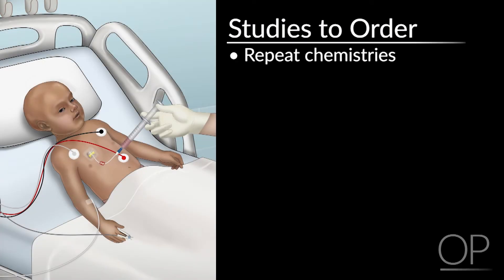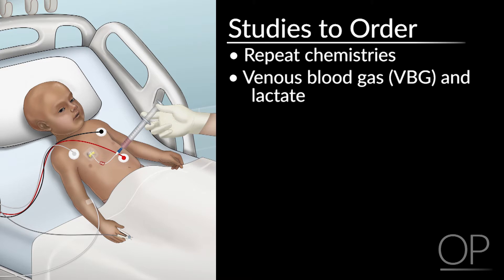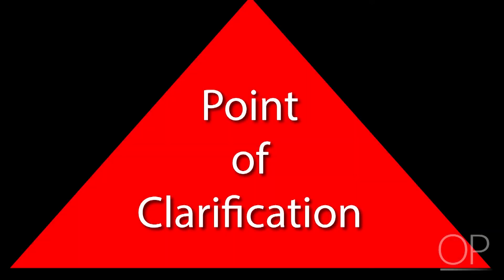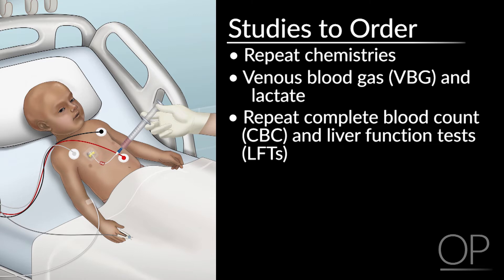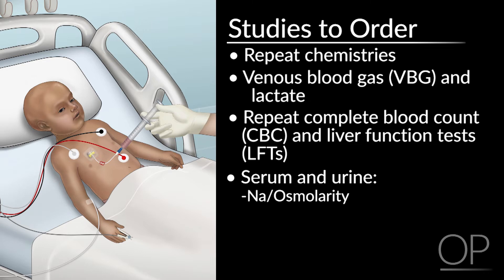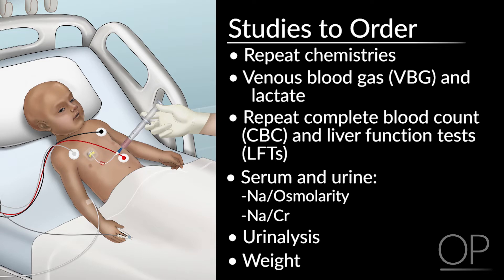Studies to order include rapidly repeating the CHEM10. Obtain a VBG and lactate if there are any signs of vital sign instability. You can also consider sending whole blood electrolytes with your VBG. Repeat the CBC and liver function test. It's reasonable to check serum sodium and serum osms, as well as urine sodium and osms. A serum sodium and creatinine with a urine sodium and creatinine. A urinalysis will allow for assessment of specific gravity and whether there are any blood or red blood cells in the urine. A weight may be appropriate if there are concerns for recent changes.